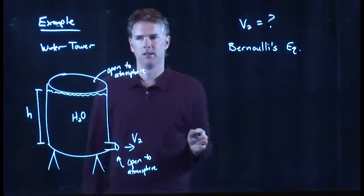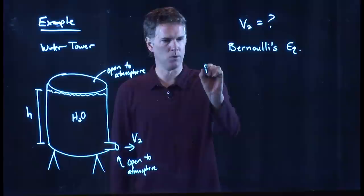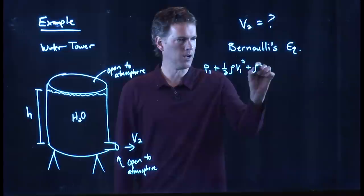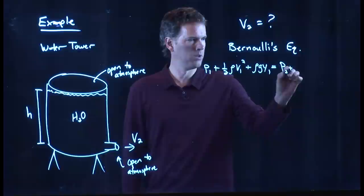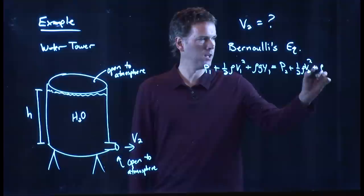So, let's write down what Bernoulli's equation is. P1 plus 1 half rho V1 squared plus rho G Y1 equals P2 plus 1 half rho V2 squared plus rho G Y2. Okay.